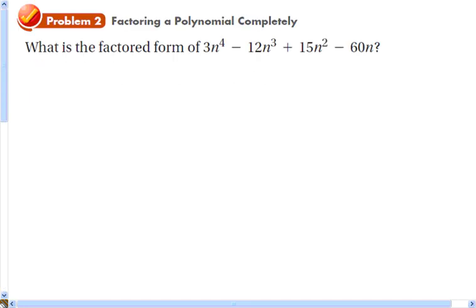What is the factored form of 3n⁴ - 12n³ + 15n² - 60n? First, check all these factors and see if there isn't a greatest common factor we can factor out. If you look closely, the greatest common factor of those terms is 3n. So we're going to factor out 3n first and rewrite that polynomial.